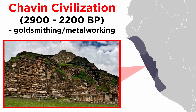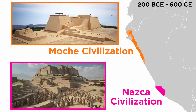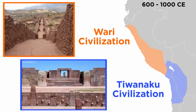The early horizon, 2900–2200 BP, saw the development and spread of the Chavin civilization, notable for their goldsmithing and metalworking. The early intermediate period saw smaller-scale civilizations, such as the Mochi and Nazca.